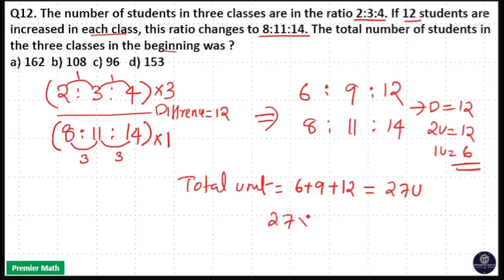So 27 × 6... 6 × 7 = 42, carry 4, 6 × 2 = 12 plus 4 = 16. So 162. Option A is your answer.